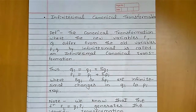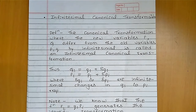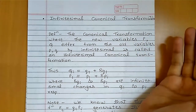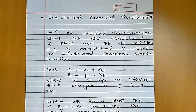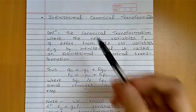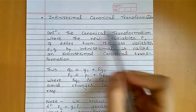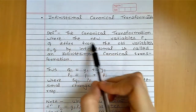Hi guys, welcome to my channel Maths with KM. Today's topic is infinitesimal canonical transformation. If you haven't subscribed my channel then please subscribe. Canonical transformation is what we have seen in previous videos — a link is in the description box. The new variables capital P and capital Q differ from the old variables small p and small q by infinitesimal amounts; this is called an infinitesimal canonical transformation.